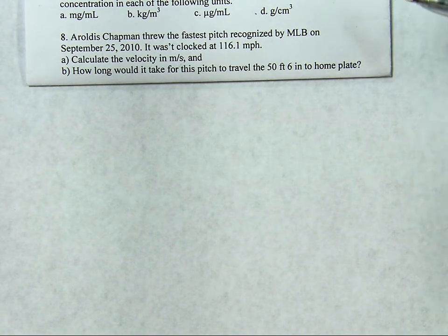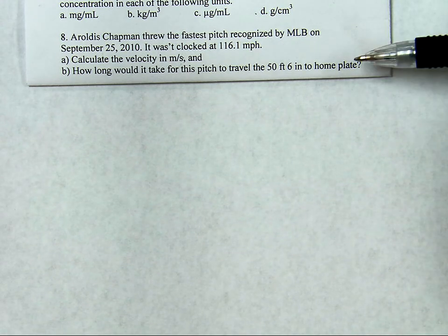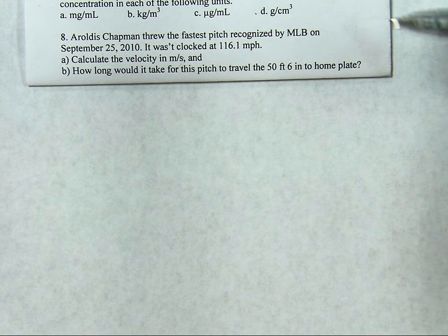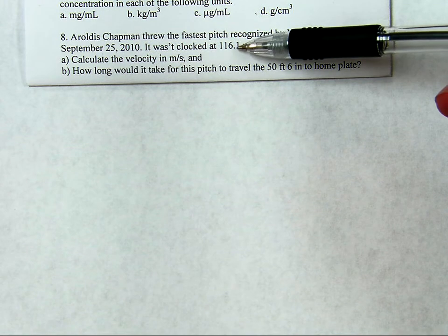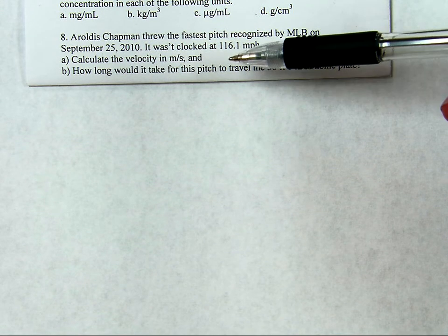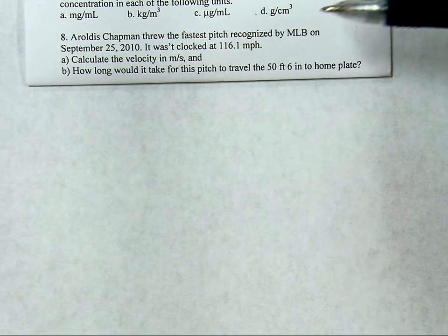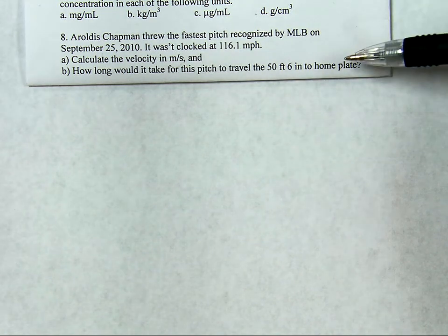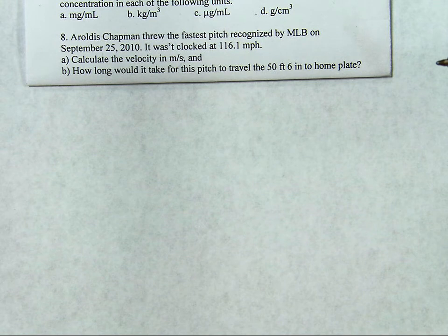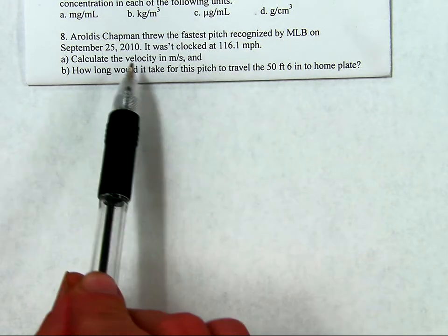So earlier, we looked at how to do this first part, calculating the velocity in meters per second, and that is going to help for this. Actually, either velocity could be used to calculate this, the 116.1 miles per hour, or the 51.9 meters per second that I got when I calculated that in terms of meters per second. Either one would give it to you, especially because all it asks is how long. So I could give it to you in hours, I could give it to you in seconds, or whatever.